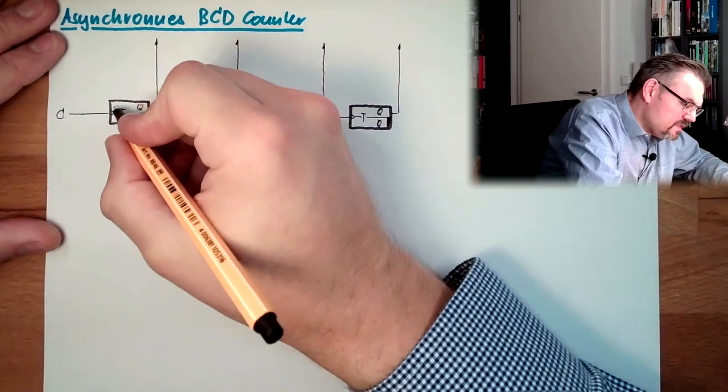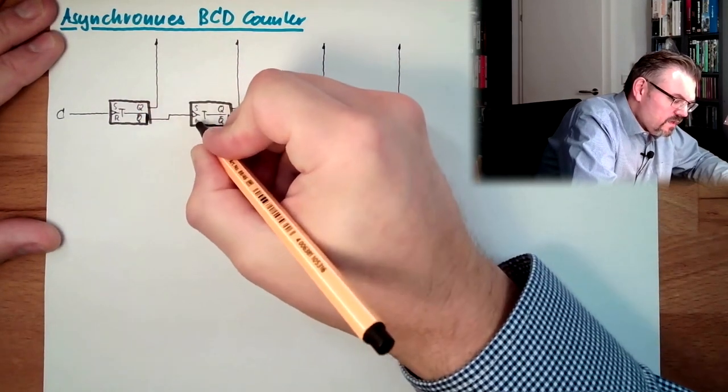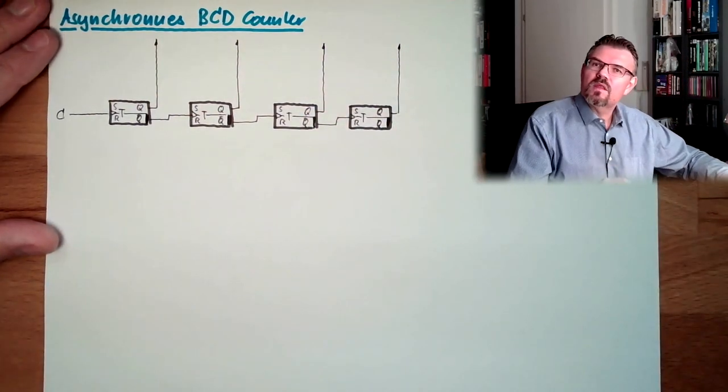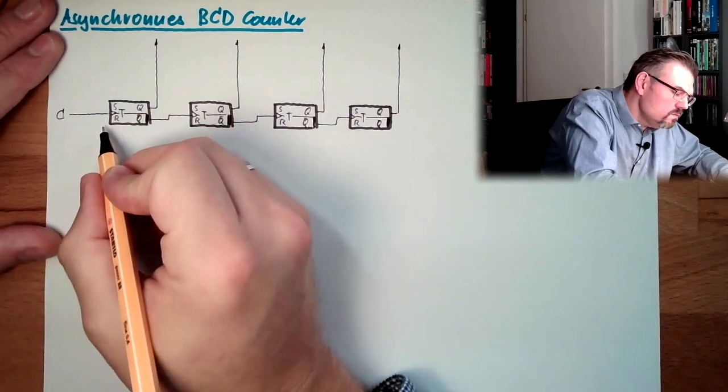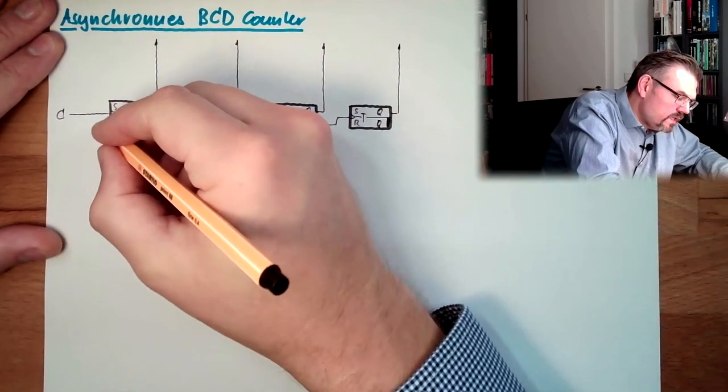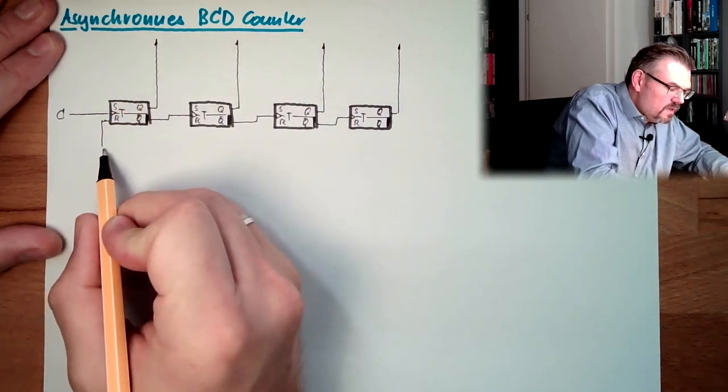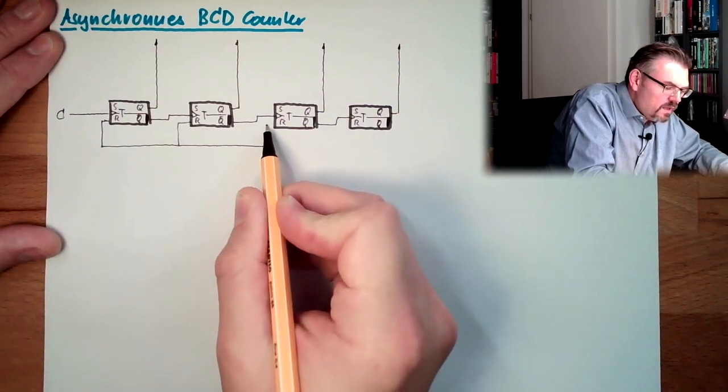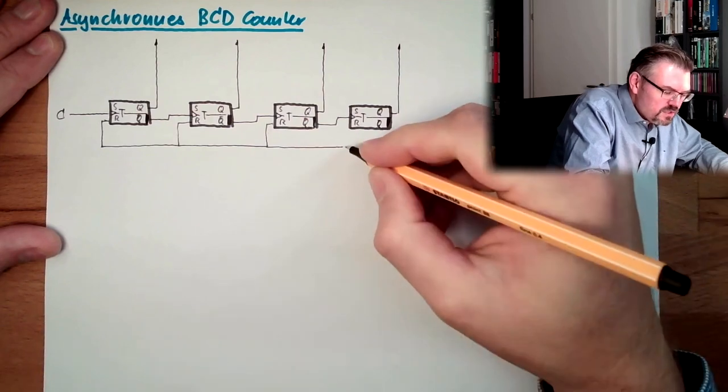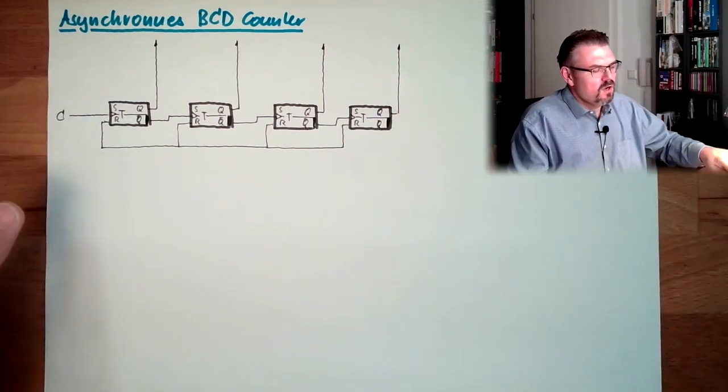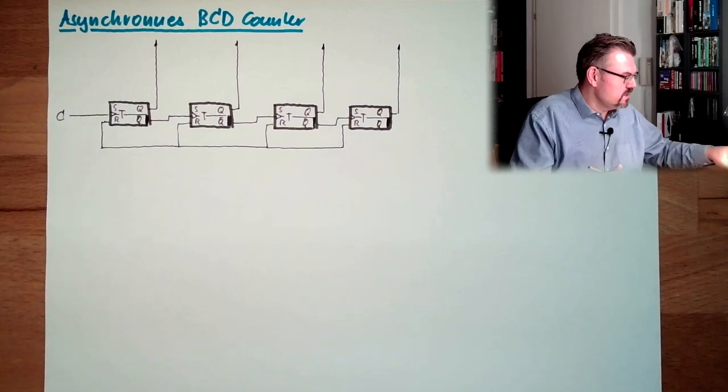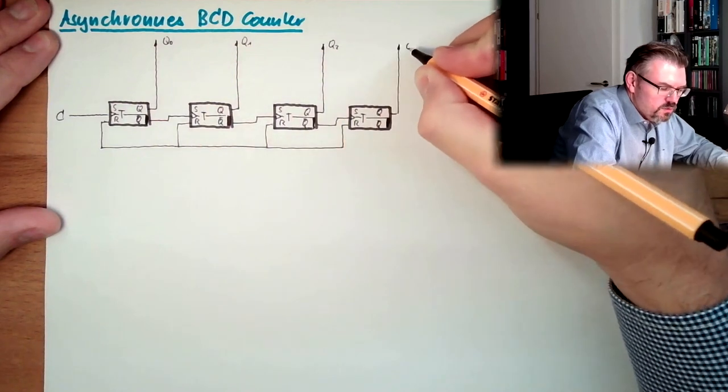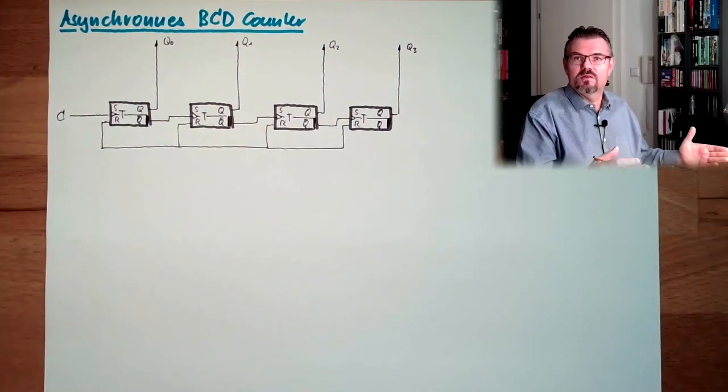And then, as we said, we have S and R inputs which are static and overrule the T input. So if the R input is here, we will directly set to zero, regardless of what is coming. And this was the reset line, which is switching this counter to zero. So this was Q0, this was Q1, this was Q2, and this was Q3.